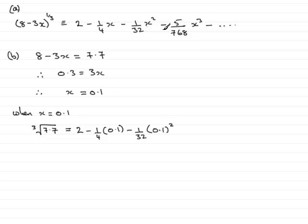And the last term here, minus 5 over 768, multiplied by x cubed. And x is 0.1, so that's 0.1 cubed.